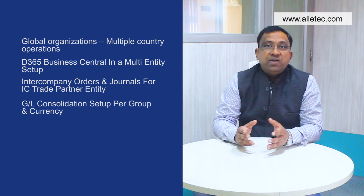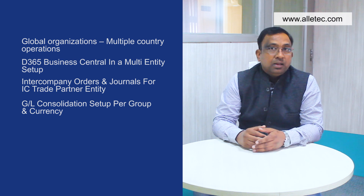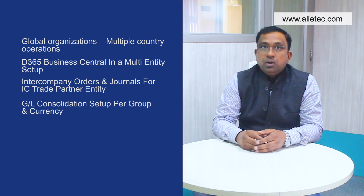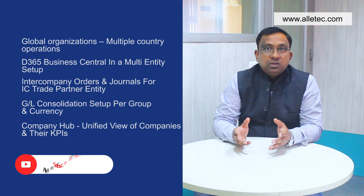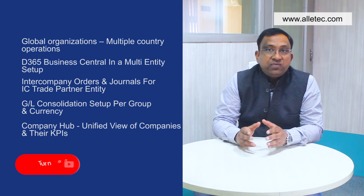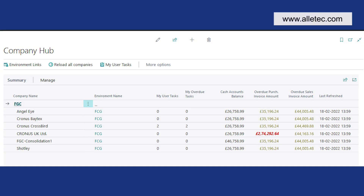The third is a more advanced feature added in recent versions of Business Central, and this is called Company Hub. No matter how you have set up intercompany consolidation features, this feature provides a unified view of the list of companies and their KPIs like overdue invoices, cash balances and tasks. This is quite useful for users in a multi-country and multi-entity setup, and for external accountants who are supposed to work for multiple clients using Business Central.